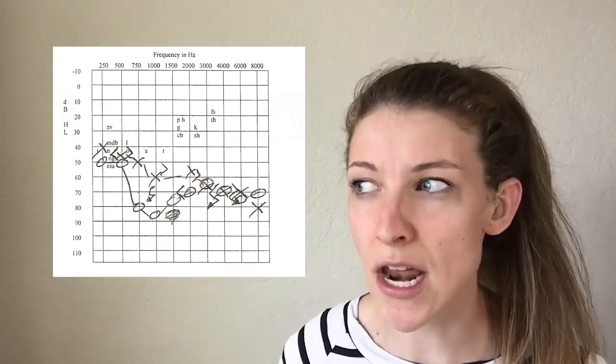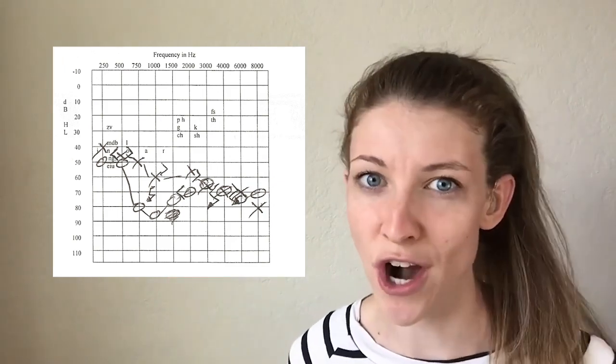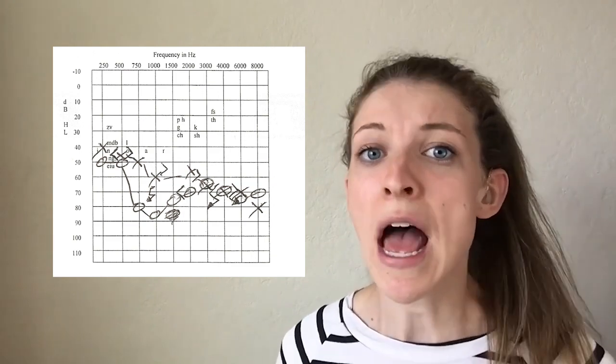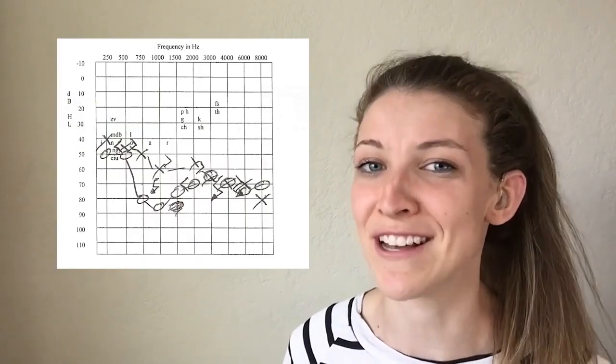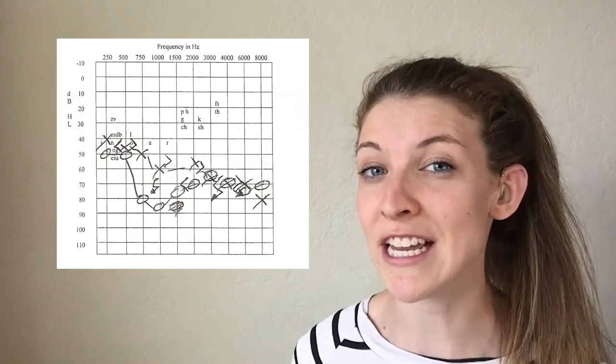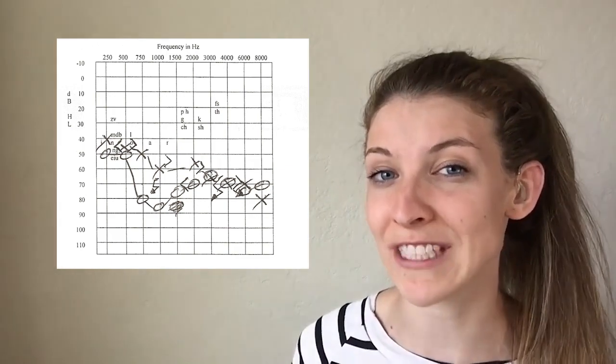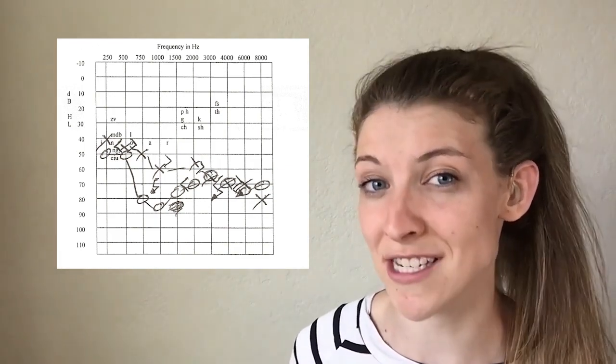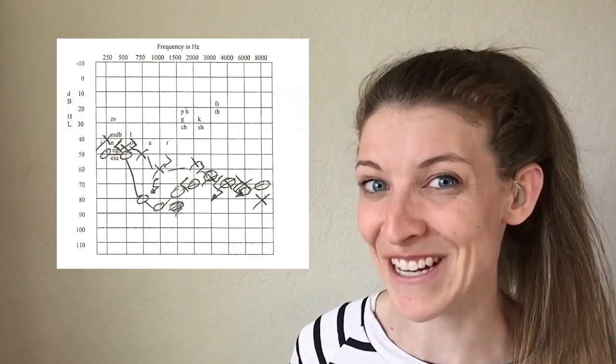It's important to understand why we chart hearing. We chart hearing so that we can understand how a specific person's ears process sound and whether or not they can hear or understand that sound. This chart — the audiogram — helps us understand the highest and lowest levels of sounds that a person can hear, and also the frequencies they can hear. Let's get into it.